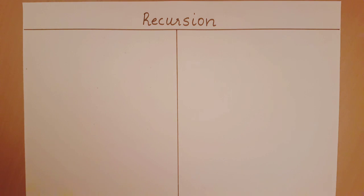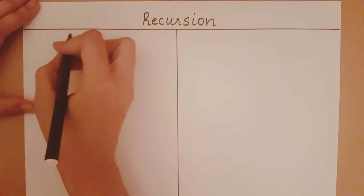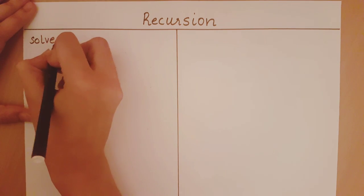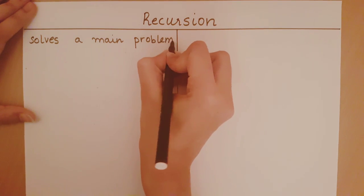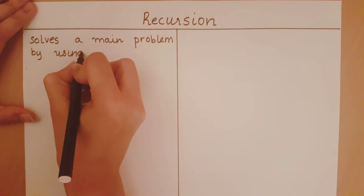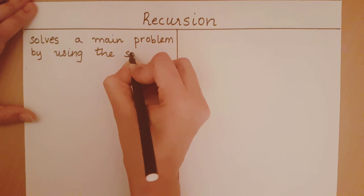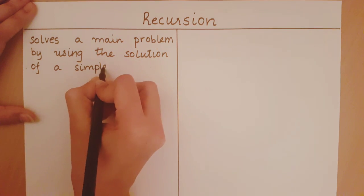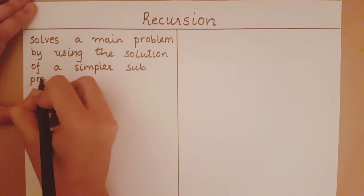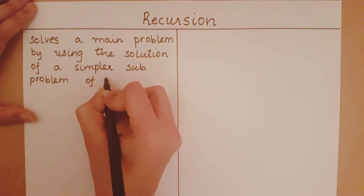So what is this strategy? A recursive algorithm is an algorithm which solves a main problem by using the solution of a simpler sub-problem of the same type.